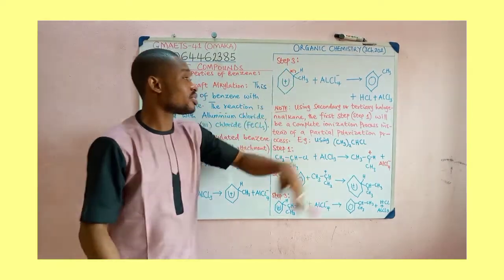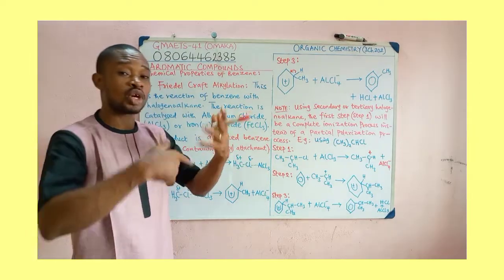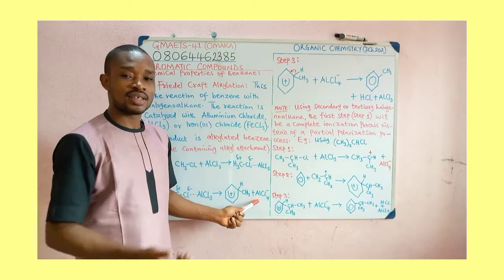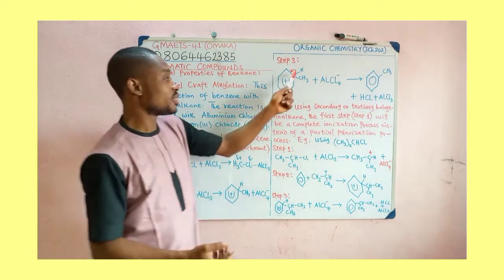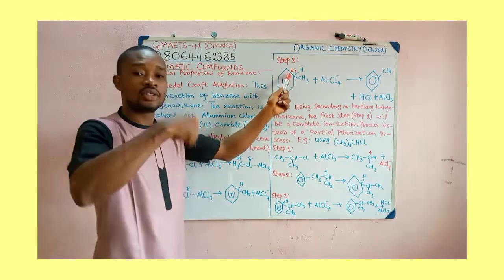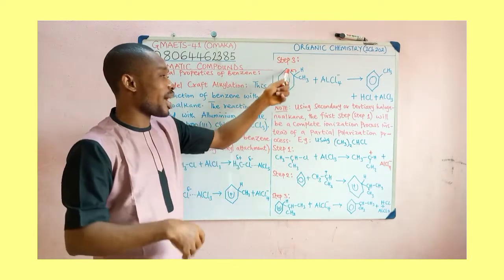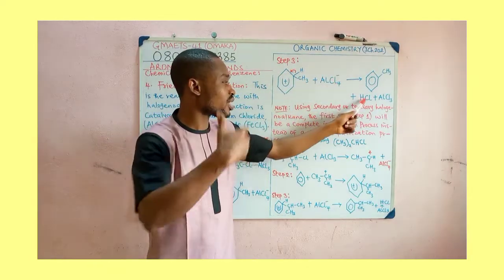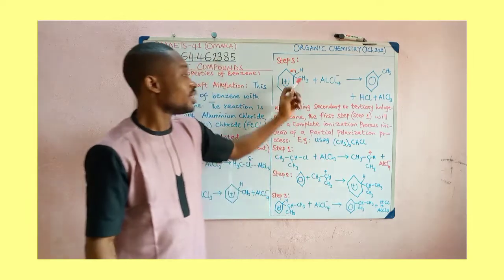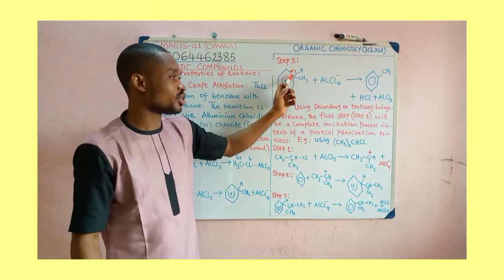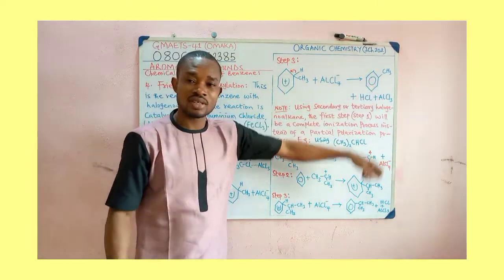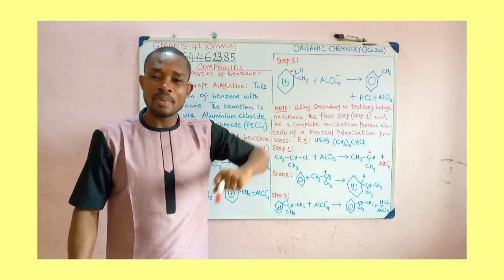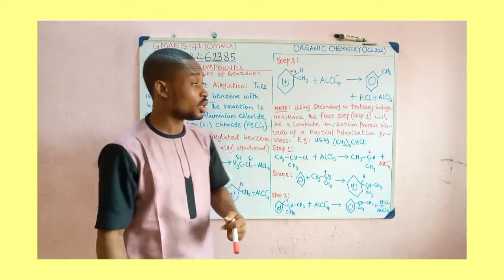Every other thing remains the same. In the third step, the proton is transferred to the ionic catalyst, and then the double bond that was broken initially is restored to form the complete ring. Once the proton is transferred, this gives us HCl and aluminium chloride, and CH3 is attached to the benzene carbon. This is our alkylbenzene — the name of that compound is methylbenzene, which can also be called toluene.